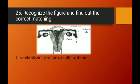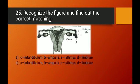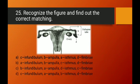Question number twenty-five: recognize the figure and find the correct matching for parts of the fallopian tube. Labeling C is the funnel-shaped part called the infundibulum — correctly given in option A. Labeling B is the ampulla — also correct. Labeling A must be the fimbria. Option A appears to be the right answer.